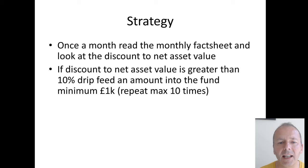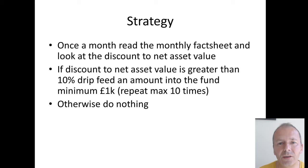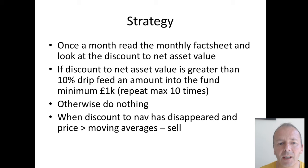If your initial target stake is £10k, you're putting in £1k over 10 times. Otherwise, do nothing. You're ideally pound cost averaging and moving into this position. When the discount to net asset value has disappeared, the price is greater than moving averages, and there are loads of positive bullish articles about these investment trusts — then you sell.